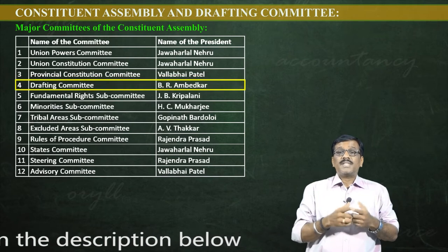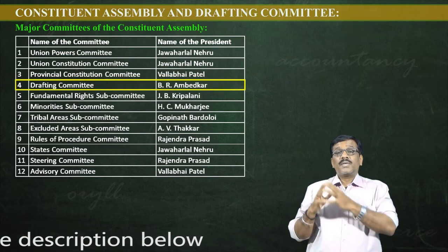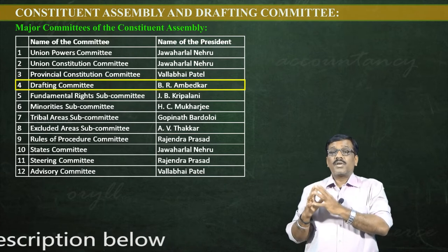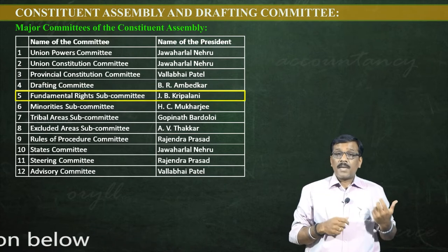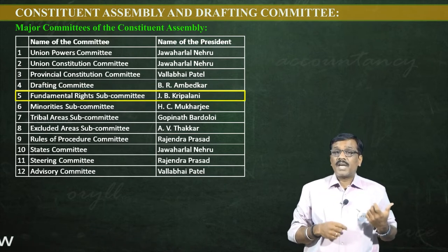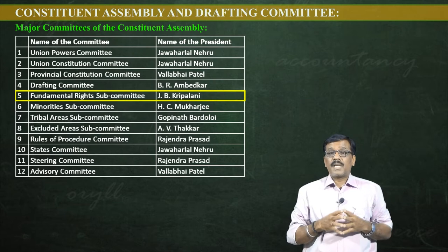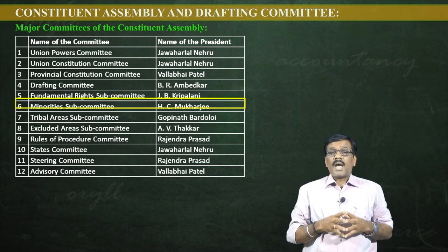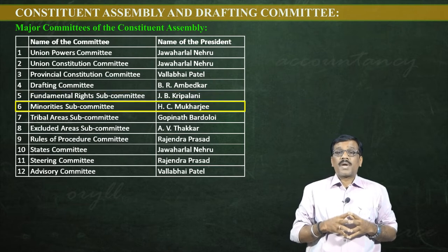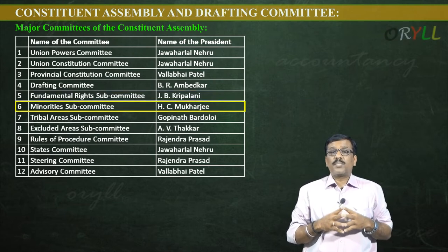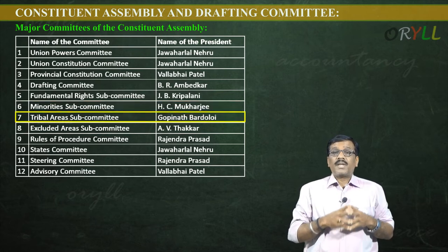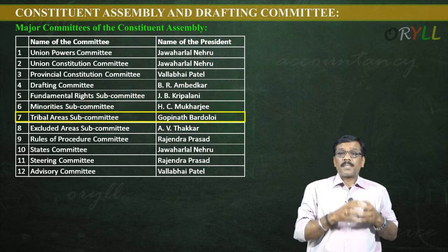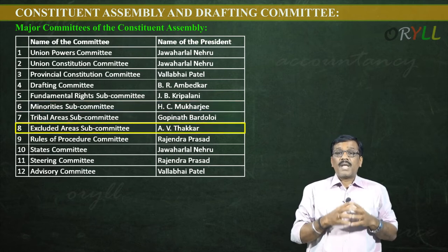The Drafting Committee, which is the most important committee, was headed by Dr. B.R. Ambedkar. The Fundamental Rights Subcommittee was headed by J.B. Kripalani, and the Minority Subcommittee was headed by H.C. Mukherjee. The Tribal Area Subcommittee was headed by Gopinath Bardalai, and the Excluded Area Subcommittee was headed by A.B. Thakkar.